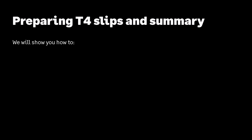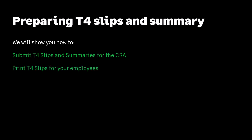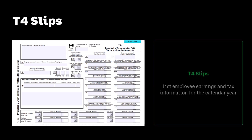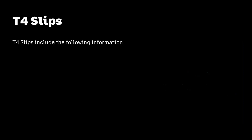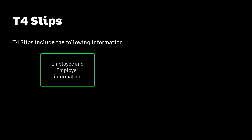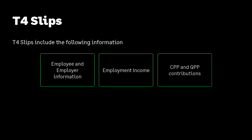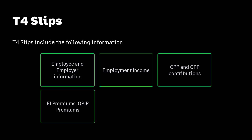Over the next few minutes we will show you how to submit T4 slips and summaries to the Canada Revenue Agency and how to print them out for employees. T4 slips list the employee earnings and tax information for the calendar year. You must submit the T4 slips to the federal government and employees after each calendar year, usually by the end of February. T4 slips include employee and employer information, employment income before deductions, Canada Pension Plan (CPP) and Quebec Pension Plan (QPP) contributions, Employment Insurance (EI) premiums, and Quebec Parental Insurance Plan (QPIP) premiums.